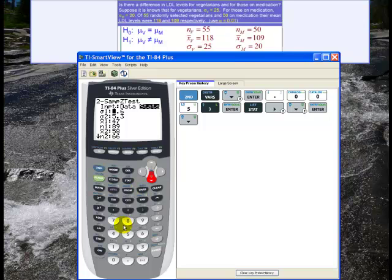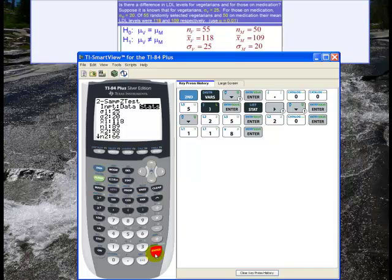So sigma sub one is 25. Sigma sub two is 20. X1 bar is 118. N1 is 55. X2 bar is 109. N2 is 50.